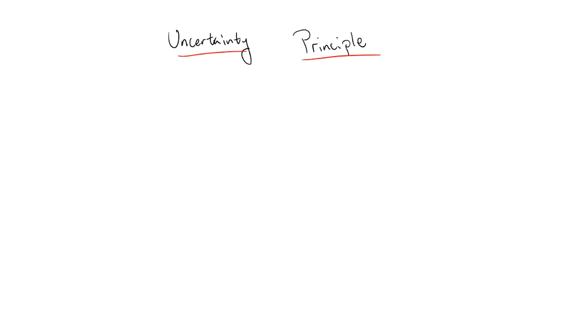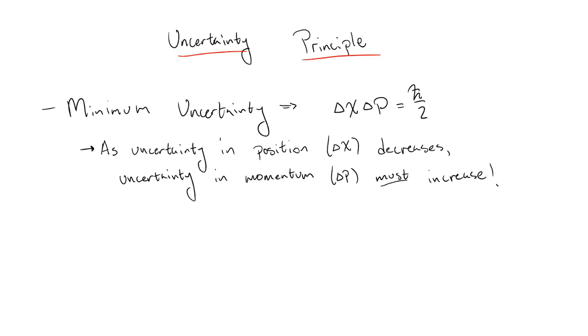The standard Heisenberg uncertainty principle that many people are familiar with involves position and momentum. As the knowledge of the particle's position becomes more and more precise, the knowledge of the particle's momentum becomes less precise. However, this is not the only uncertainty relation in quantum mechanics, and the one relevant for this discussion is the uncertainty relation between energy and time.